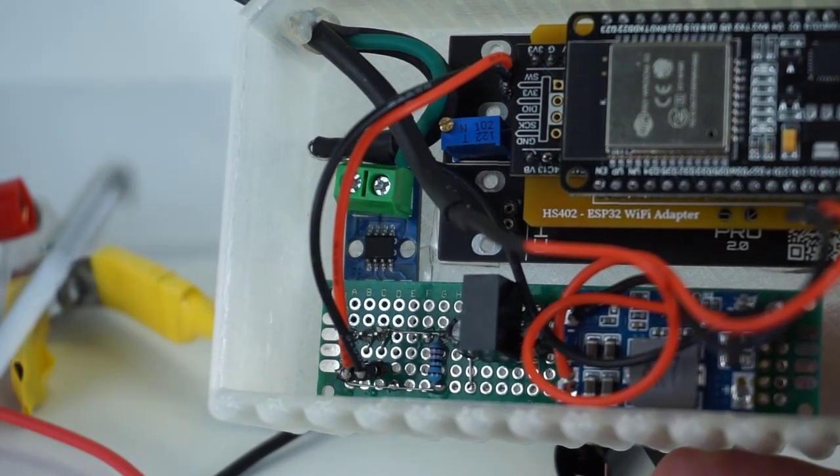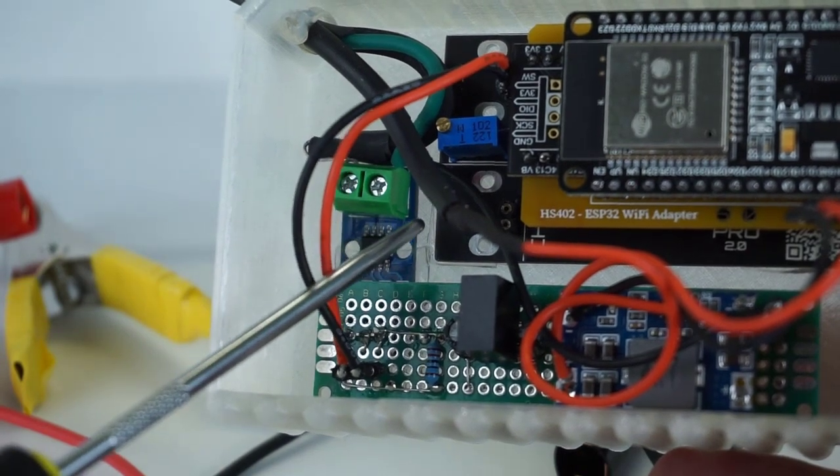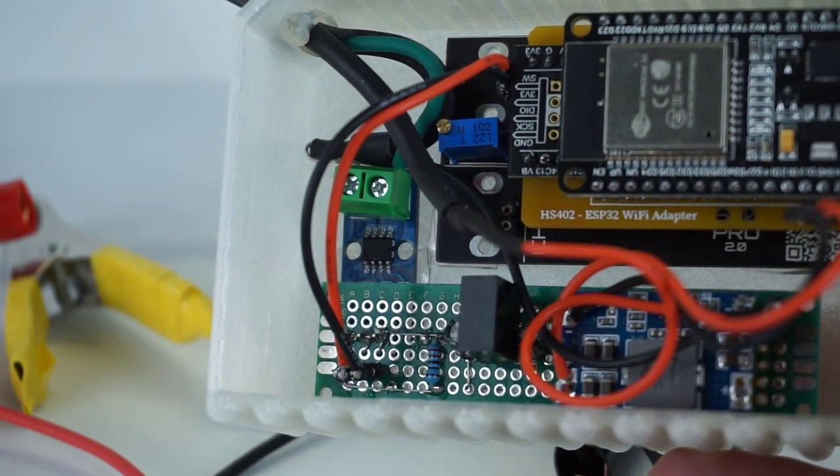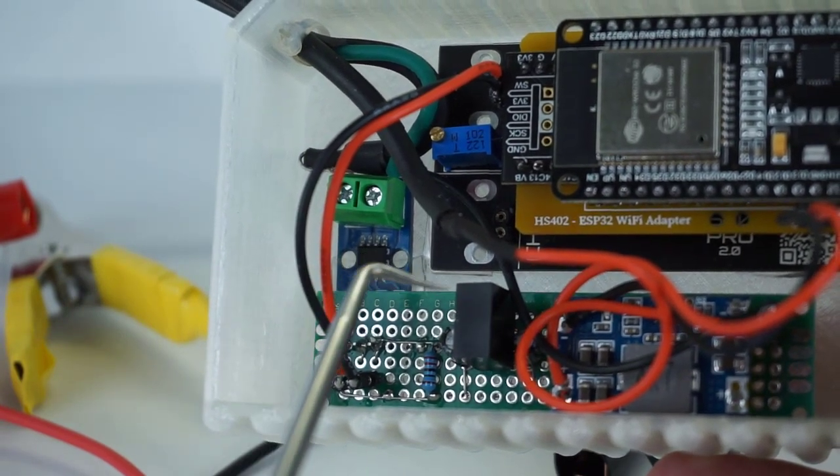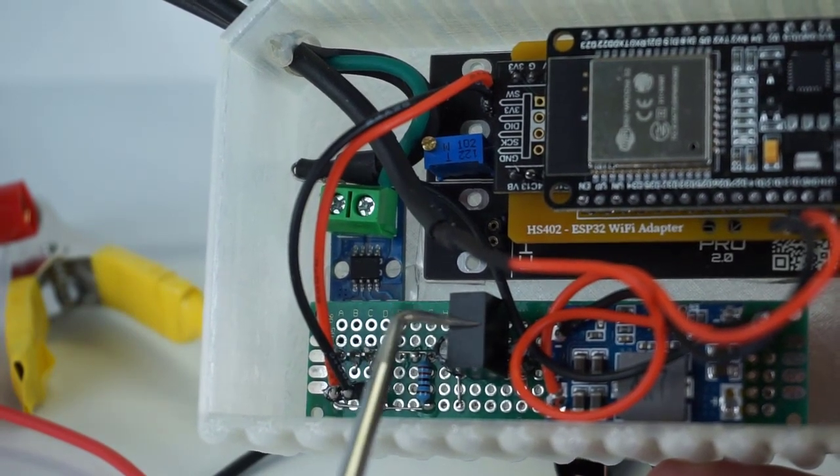Because we're powering the HS402 and that current module from the same power source, the vehicle battery, we need to isolate the grounds. That is what this B0505S isolator is for.